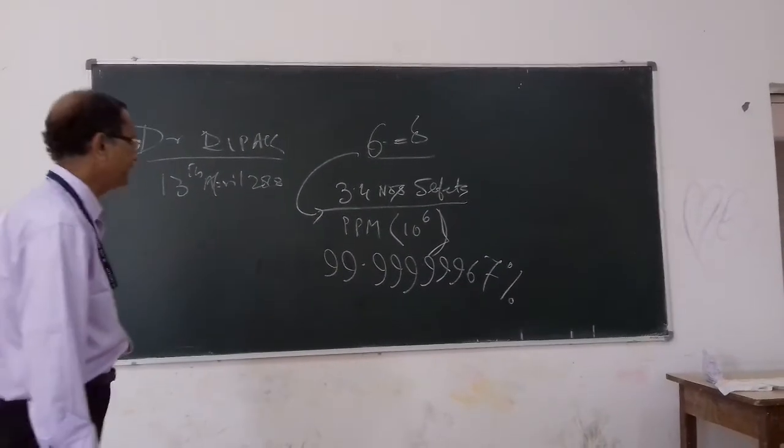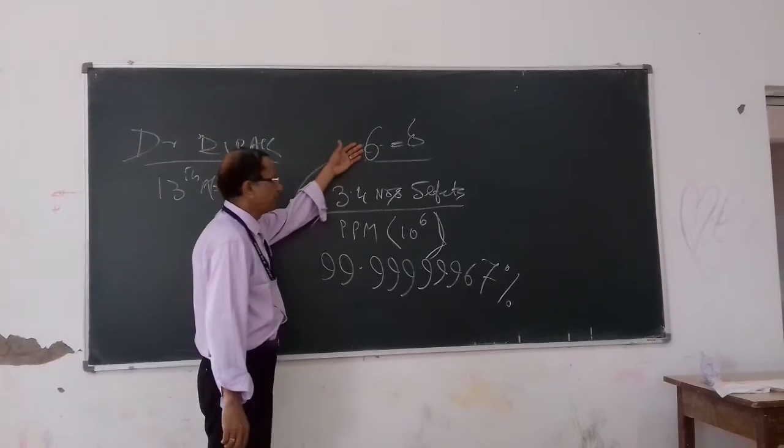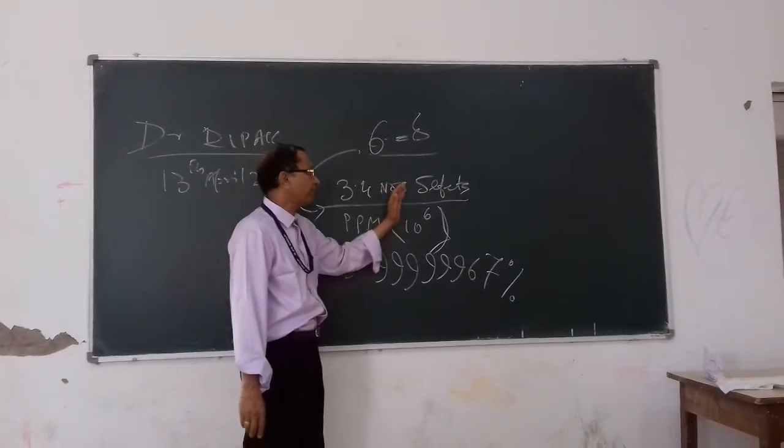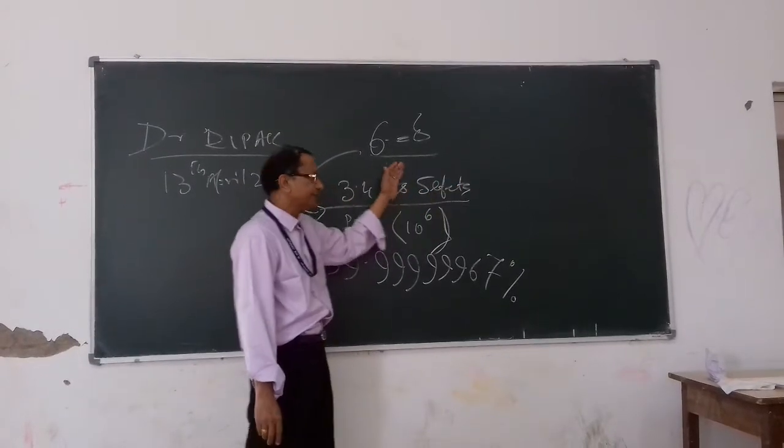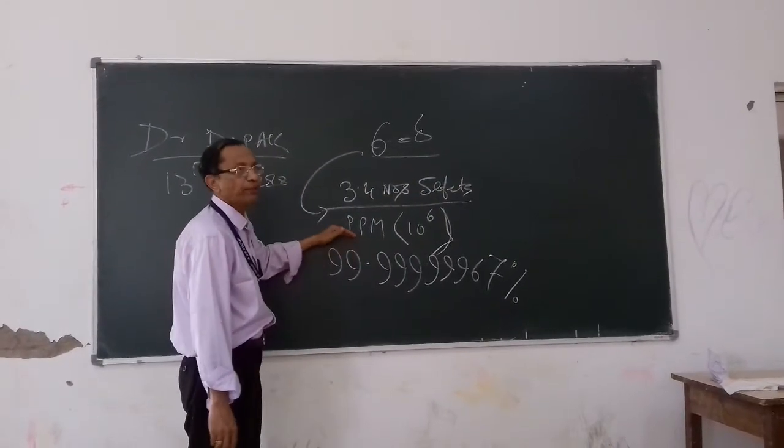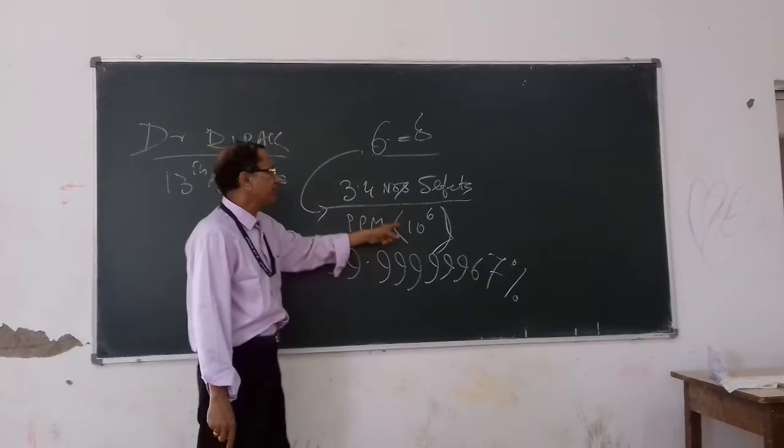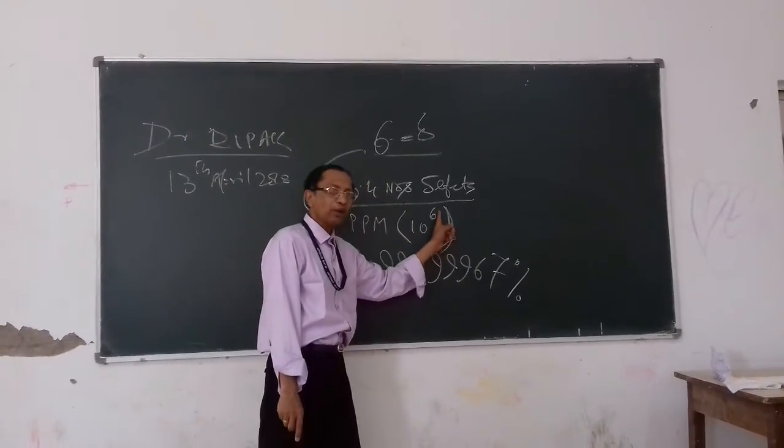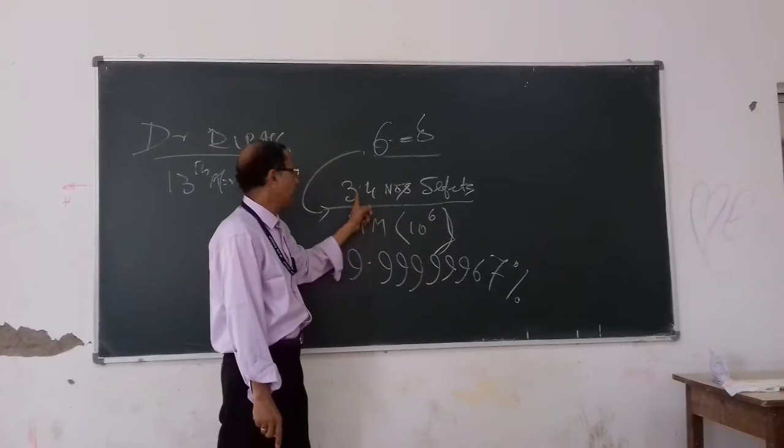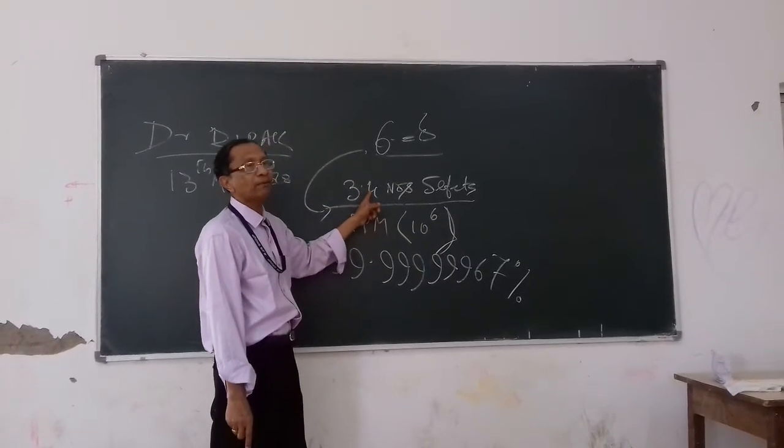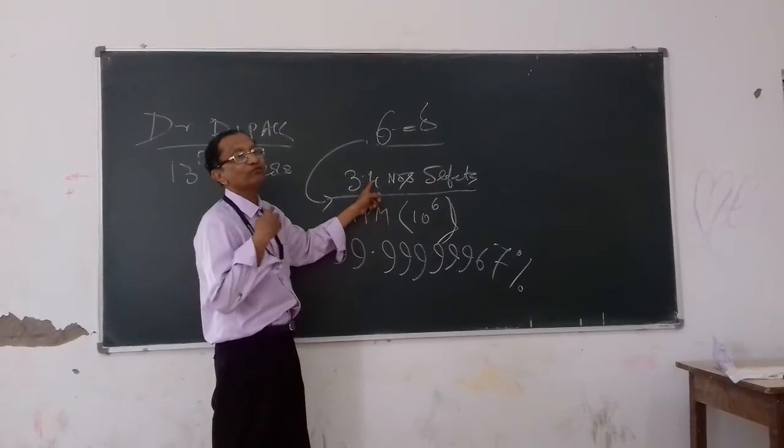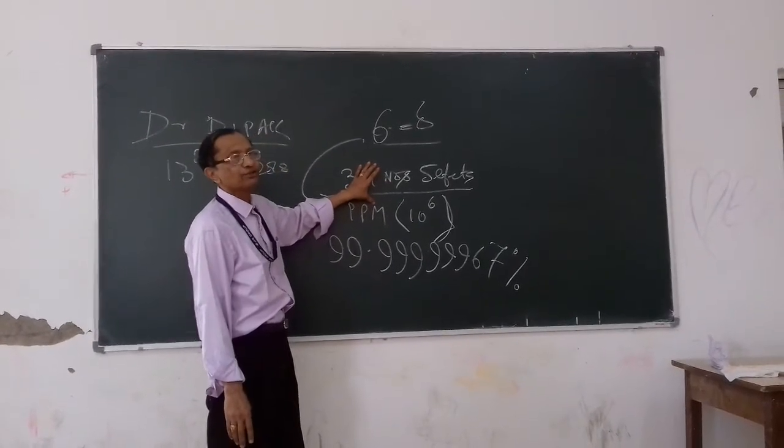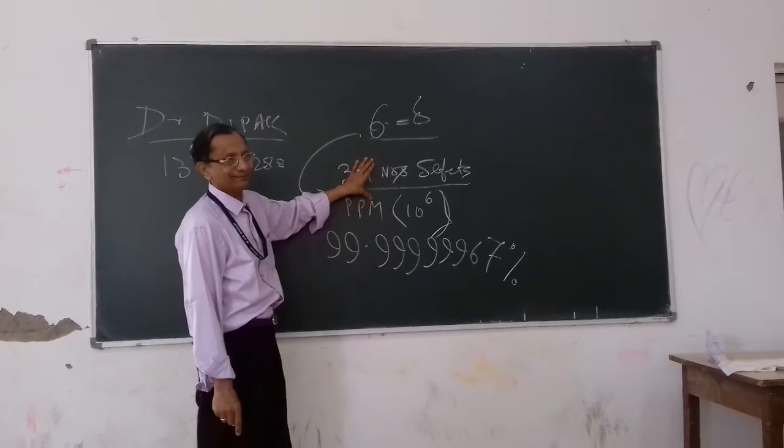I repeat again. Six Sigma is defined as 3.4 numbers of defect is allowed. PPM means that if you produce 10 lakh product, out of 10 lakh product, only 3.4 numbers of defect is allowed. Then only you can say this is Six Sigma quality. You understand.